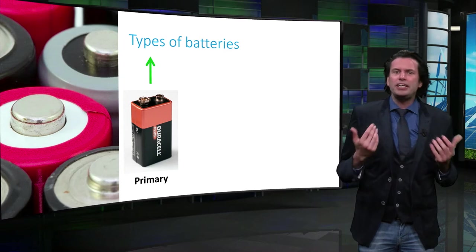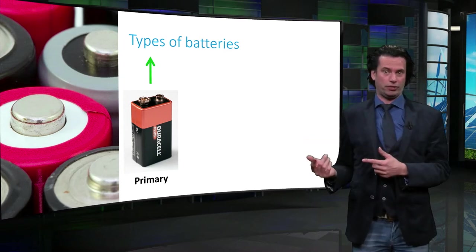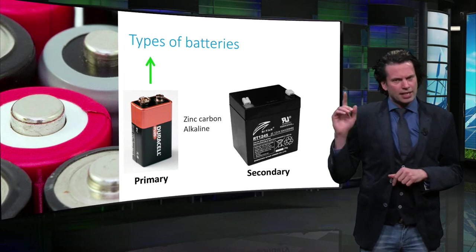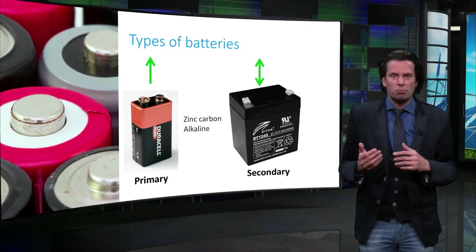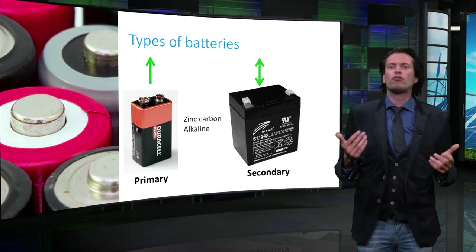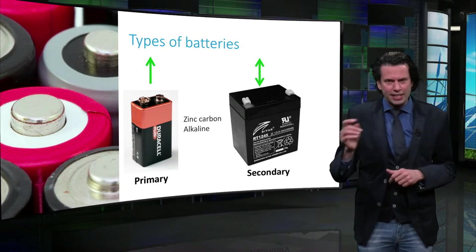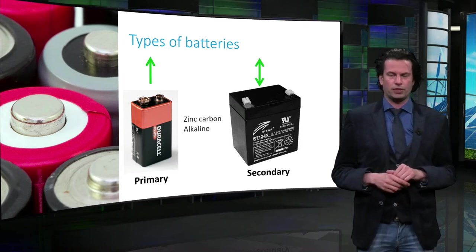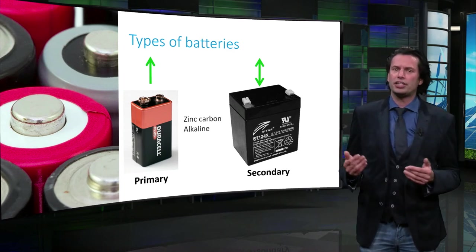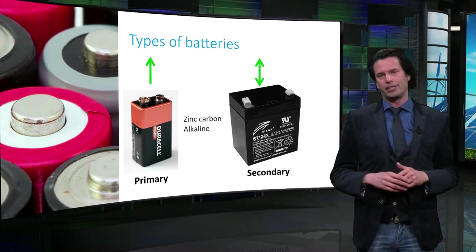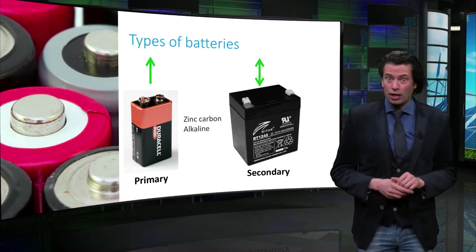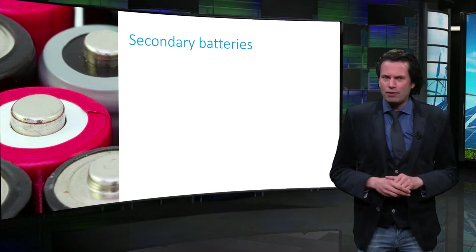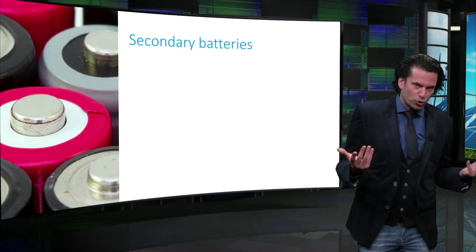Primary batteries irreversibly convert chemical energy to electrical energy. Examples include the zinc-carbon batteries and the alkaline batteries. Secondary batteries, or as they are more commonly called rechargeable batteries, reversibly convert chemical energy to electrical energy. That is, they can recharge when the chemical reaction is reversed using an overpotential. In other words, the excess electrical energy is stored in these secondary batteries in the form of chemical energy.